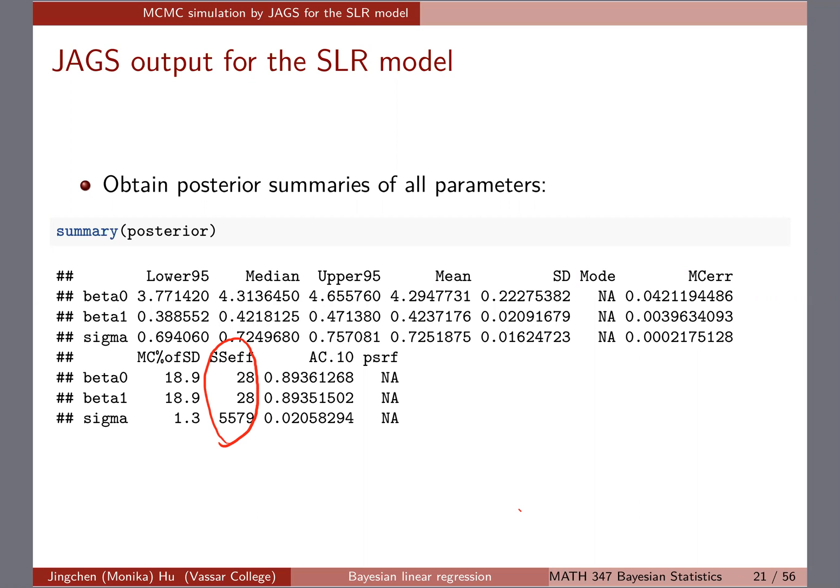Student question: if we're given summary statistics that imply a parameter isn't exploring the parameter space well — low effective sample size — why would we believe that thinning or running the chain longer would help it explore the space at all? Effective sample size is a rule-of-thumb check. If you can't get enough, it suggests we're not exploring well enough, and thinning or longer chains can help alleviate that issue. But honestly, you can never be fully sure you've explored the parameter space well enough.